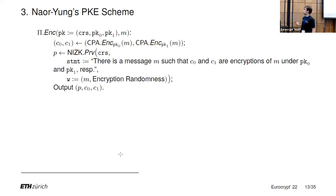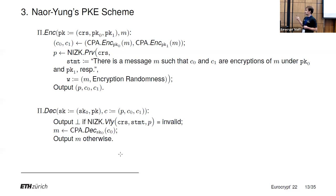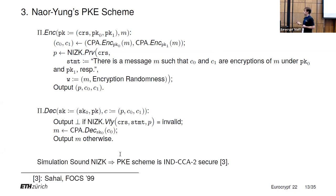For encryption, the sender generates two ciphertexts, each an encryption under one of the public keys of the receiver, and then uses the NIZK scheme to prove that there is some message that both ciphertexts are encryptions of the same message. The ciphertext corresponds to the NIZK proof and the two ciphertexts generated. For decryption, a receiver first checks if the NIZK proof is valid, and if so, decrypts the first ciphertext and outputs the underlying message. If the NIZK scheme is simulation sound, the PKE scheme will actually be IND-CCA2 secure.